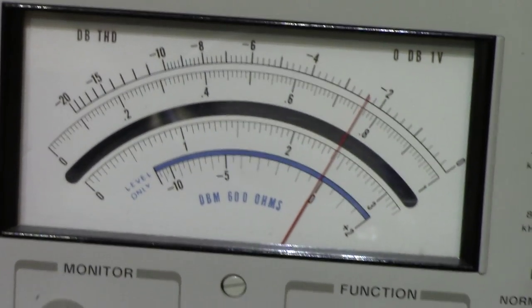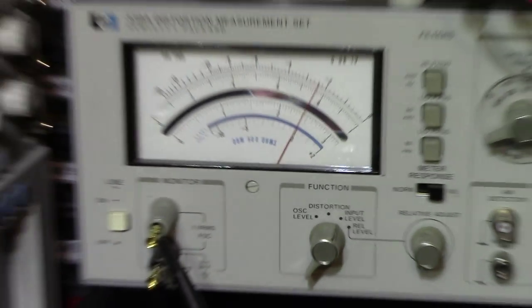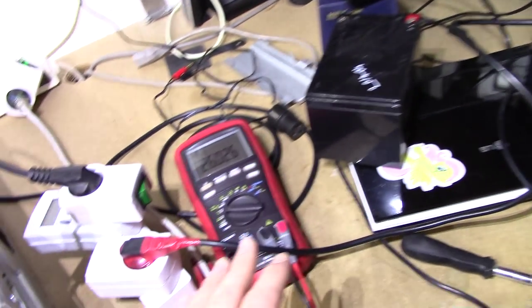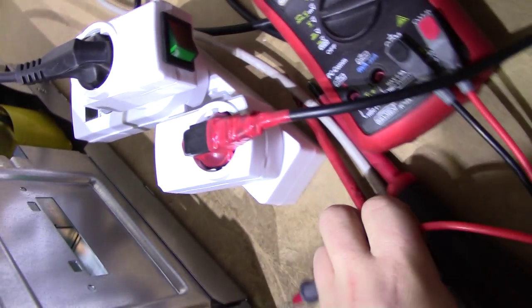And it seems that that meter has response high enough to trigger off that, whereas my multimeter doesn't. Because if we just grab my probes and shove them into an outlet,